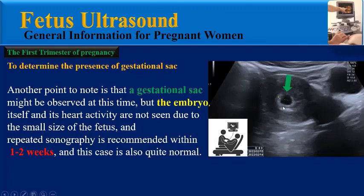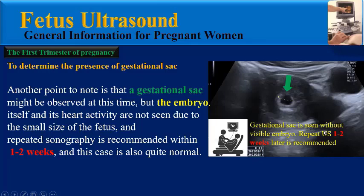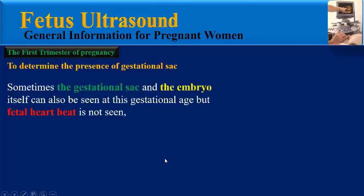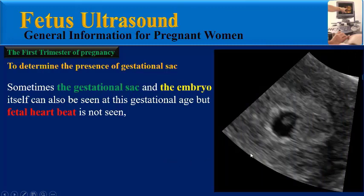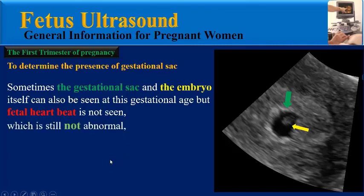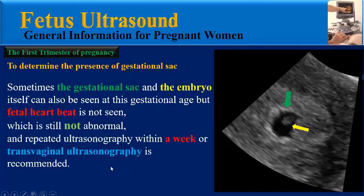As you can see in this image, there is a pregnancy sac in the womb but no fetus inside it. The physician reports: 'Gestational sac seen without visible embryo; repeat ultrasound one to two weeks later is recommended.' Sometimes the gestational sac and the embryo itself can also be seen at this gestational age, but the fetal heartbeat is not seen, which is still not abnormal. Repeated sonography within a week or transvaginal ultrasonography is recommended.